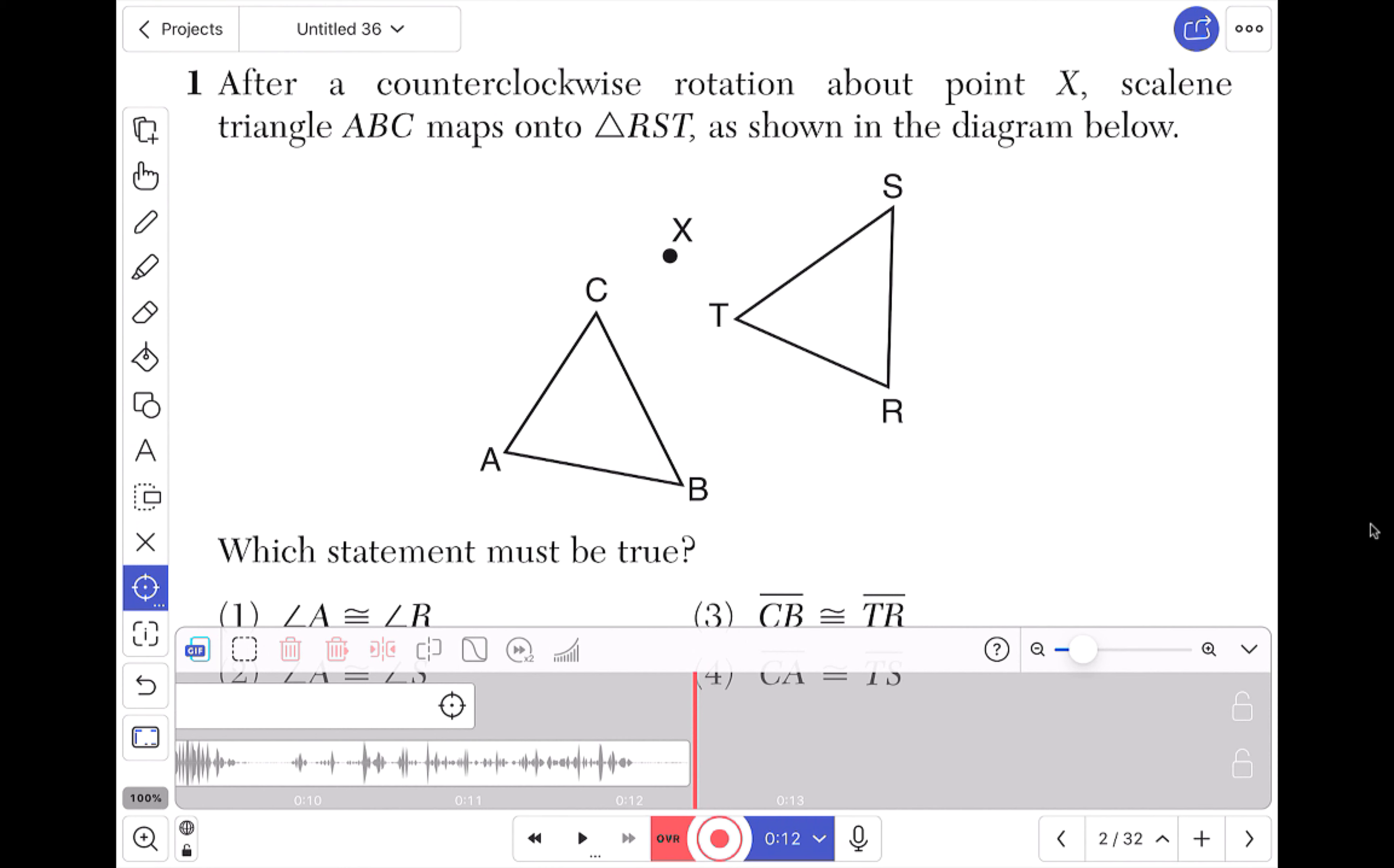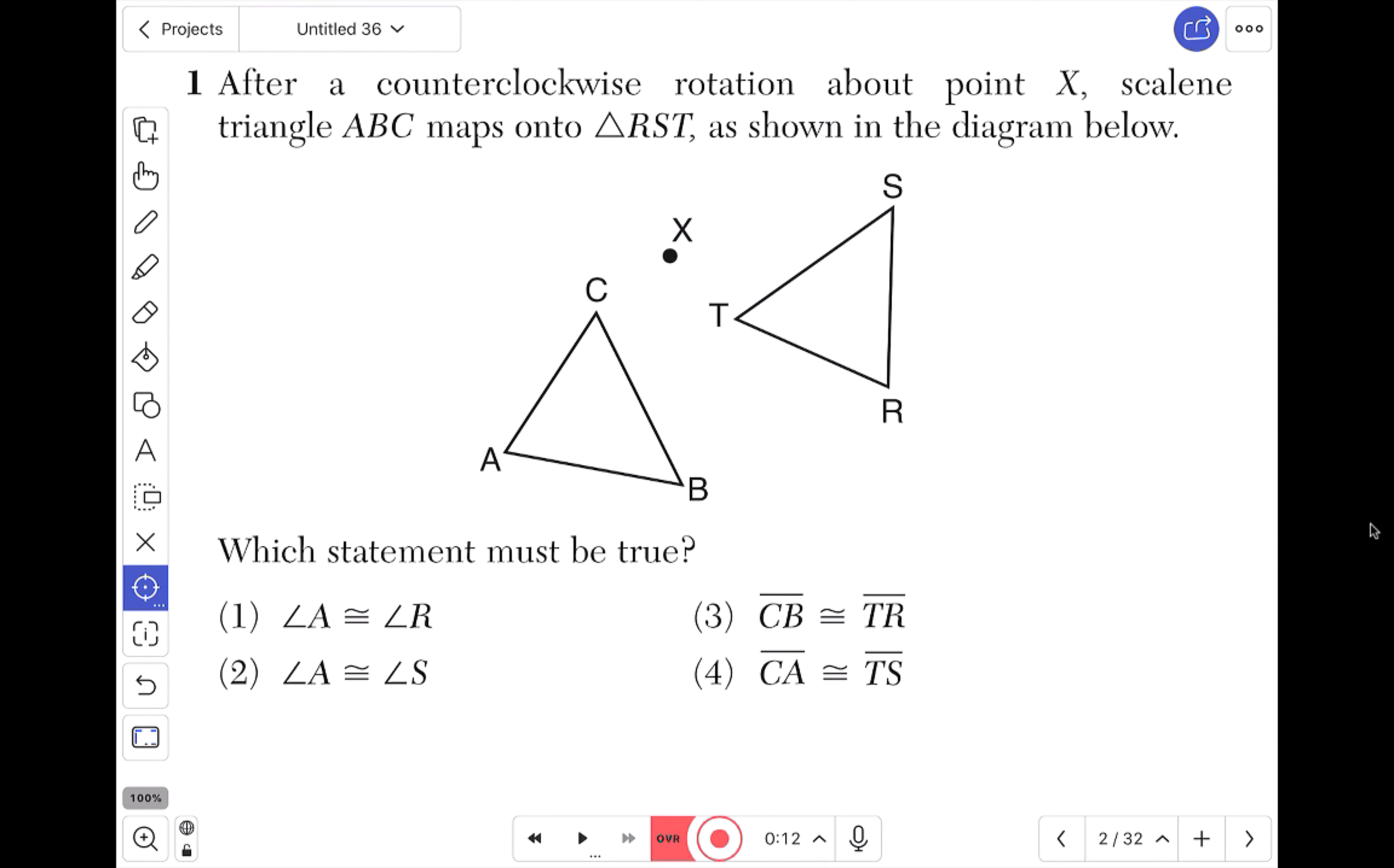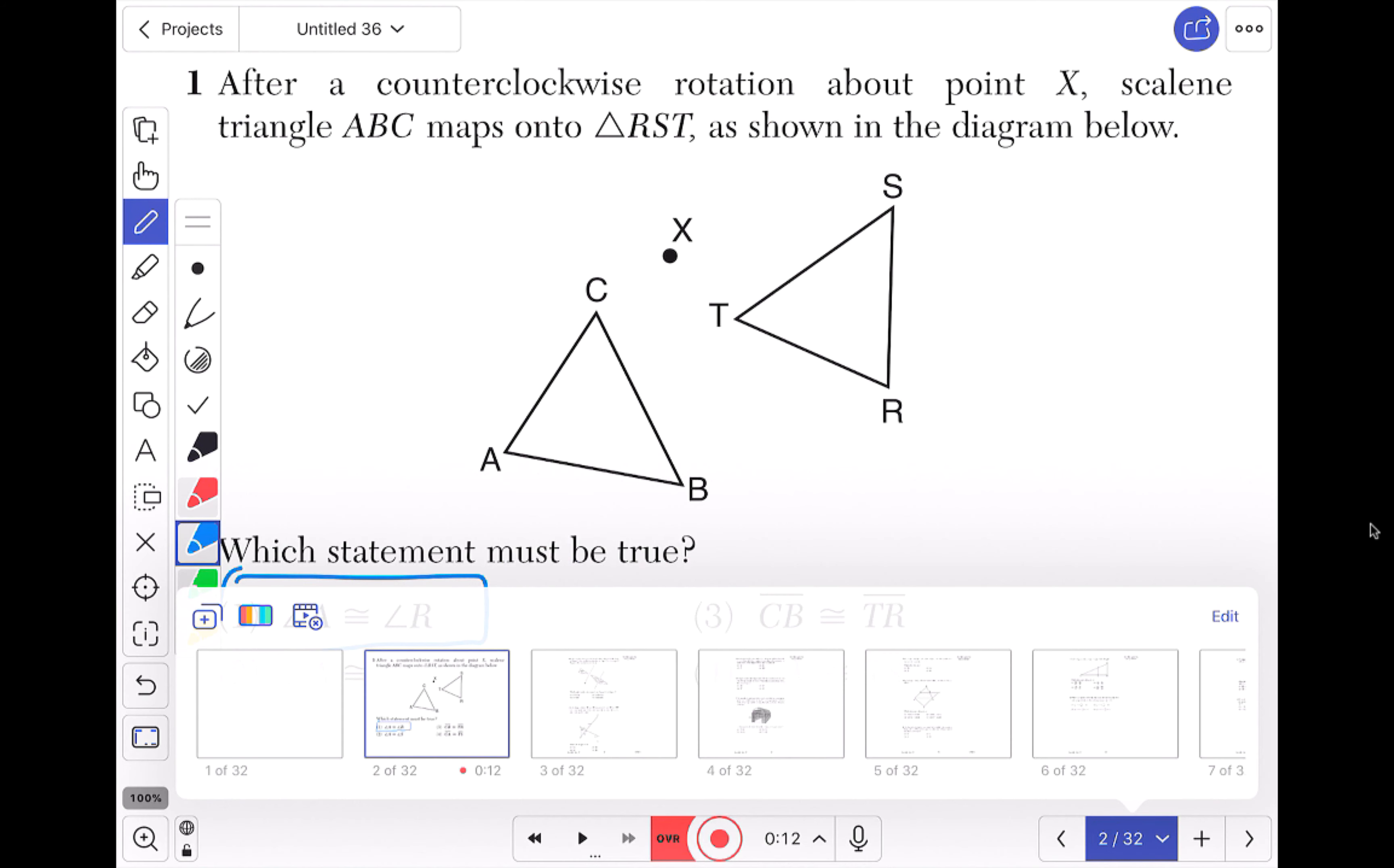Question number one, after a counterclockwise rotation... So that's super helpful. Let's say that we annotated and diagrammed this problem, we're able to correctly identify the right answer. What happens next? And this is really important. What I'm going to do is I'm going to click on slide two of 32 in the lower right-hand corner and I'm going to hold it for just a moment.